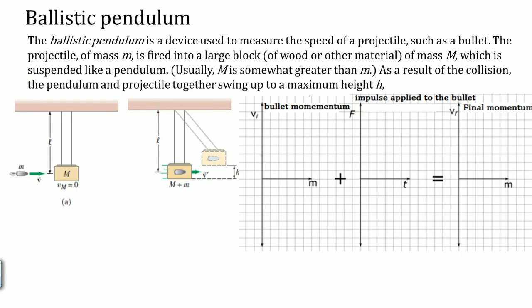This classic problem is called the ballistic pendulum. A bullet comes straight in. The ballistic pendulum is a device used to measure the speed of a projectile such as a bullet. The projectile of mass m is fired into a large block of wood of mass M, which is suspended like a pendulum. Usually M is somewhat greater than little m. After the collision, the pendulum and projectile stick together and swing up to a maximum height H.